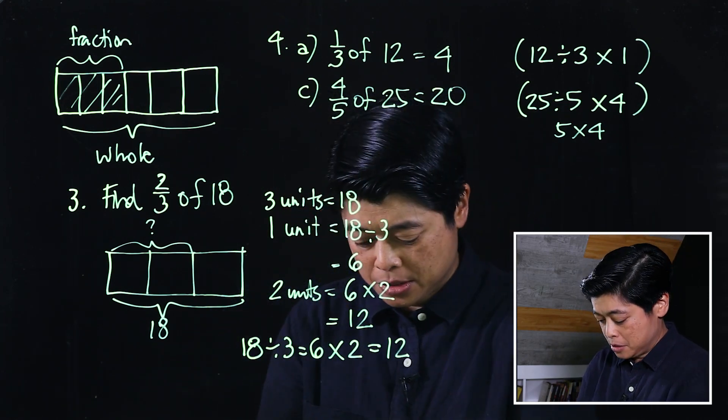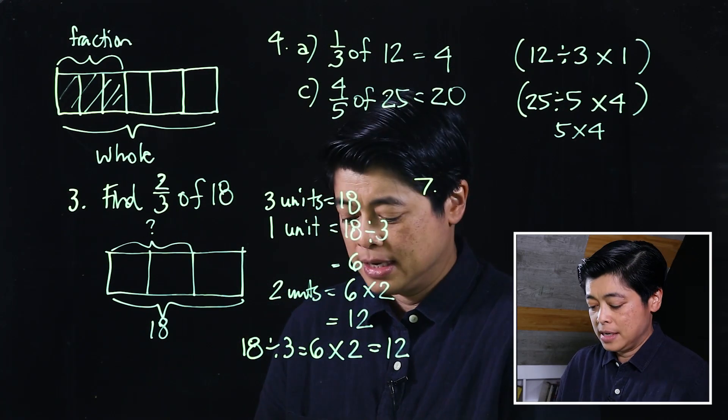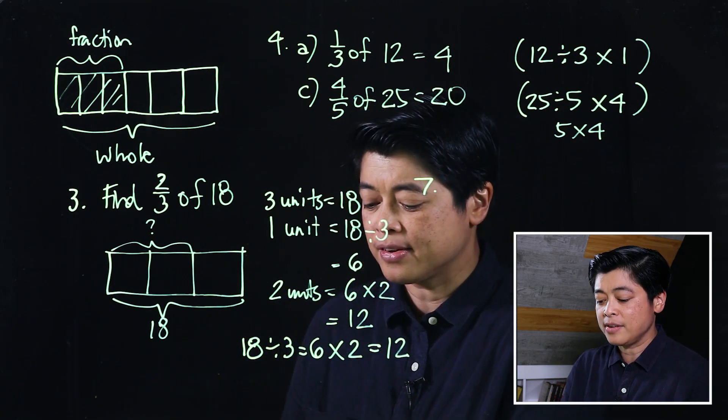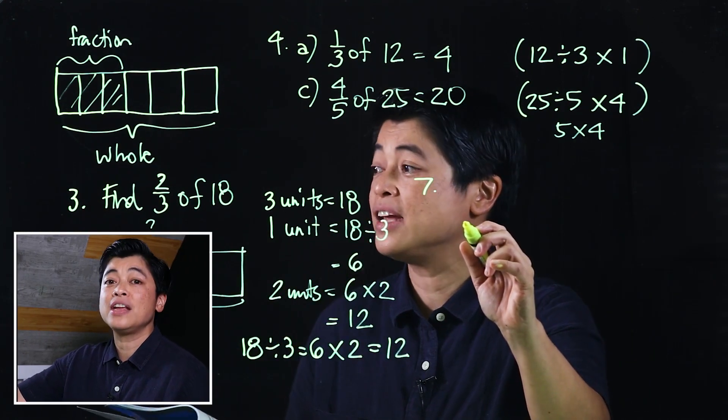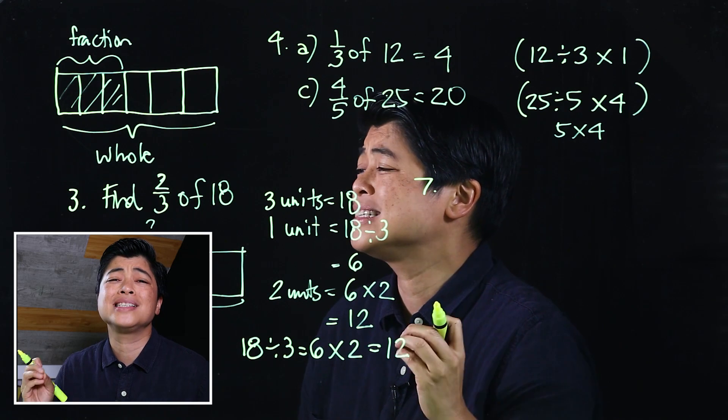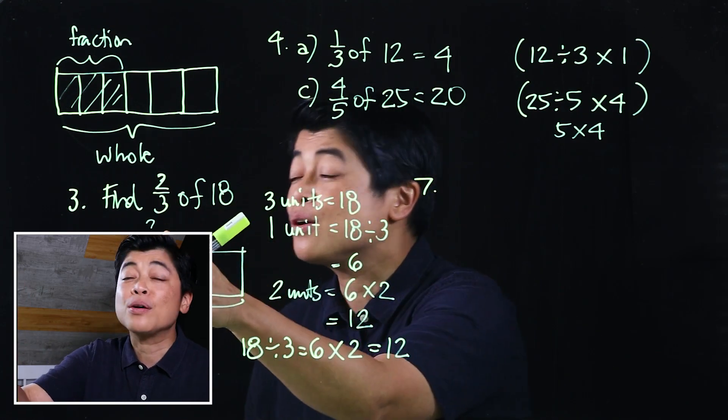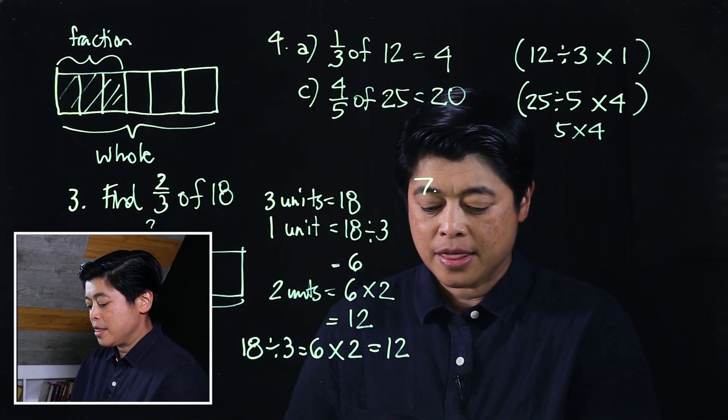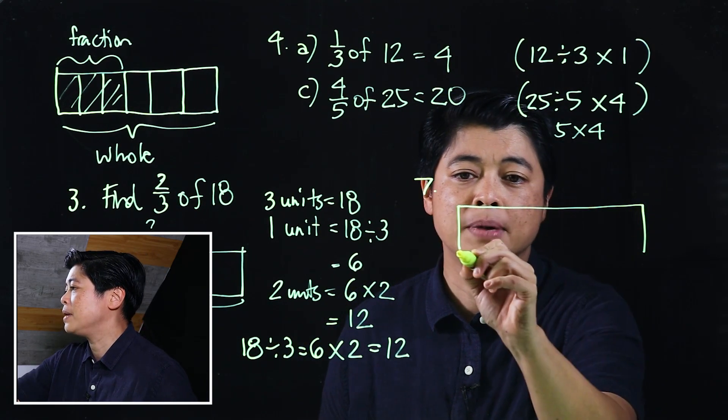An application of that can be seen on page 32, number 7. It says a group of pupils visited the museum. Three-eighths of the pupils are girls. There are 27 girls. How many pupils visited the museum? Since this is a word problem, this is when it's ideal to do the bar models. This is not a word problem, so I don't need a bar model for that. Three-eighths of the pupils are girls, so we will divide the whole by 8.